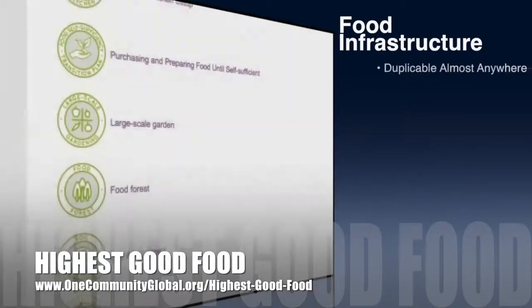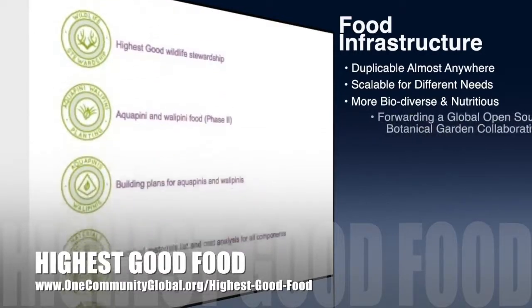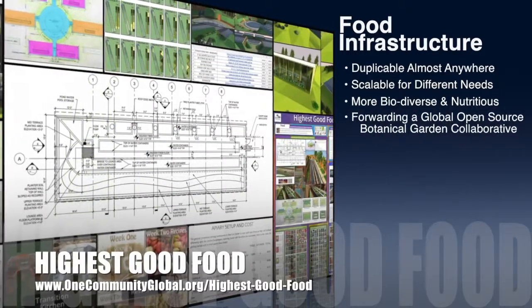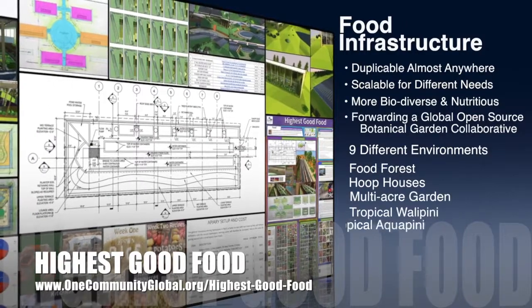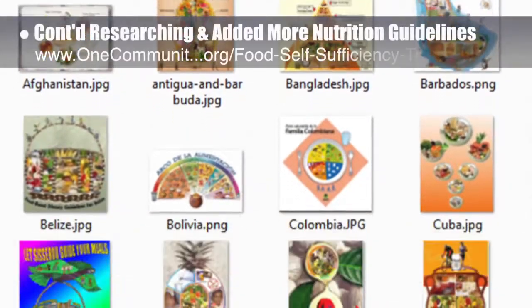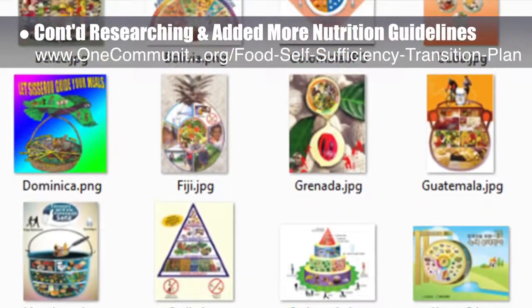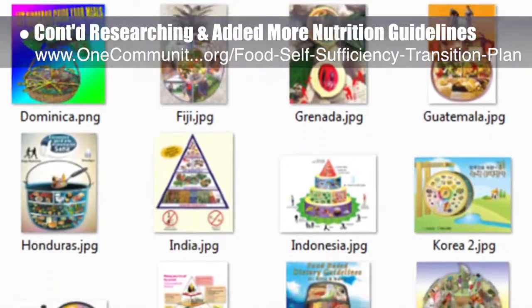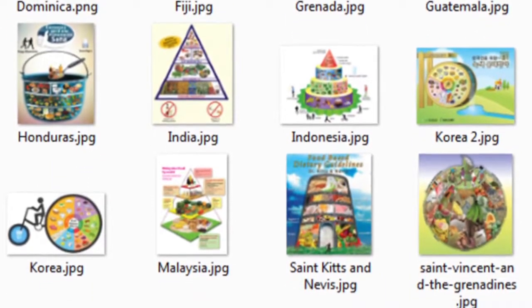One Community's approach to Highest Good Food is duplicable almost anywhere, scalable for different needs, more biodiverse and nutritious, part of forwarding a global open source botanical garden collaborative, and includes nine different free shared and duplicable growing environments. This week the core team continued researching and organizing, and added more data for 20 countries' nutrition guidelines to the resource chart for our food self-sufficiency transition plan and sustainable food nutrition calculations page.